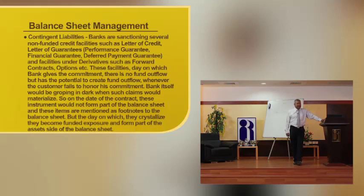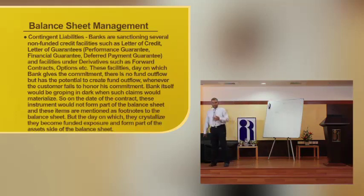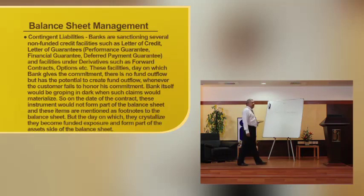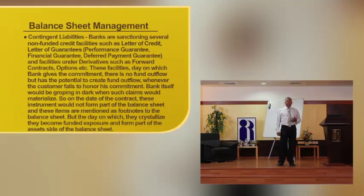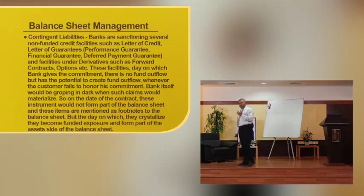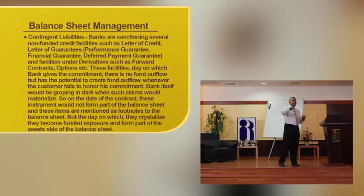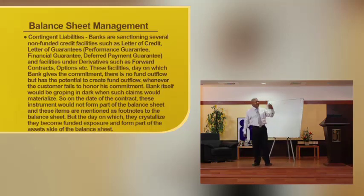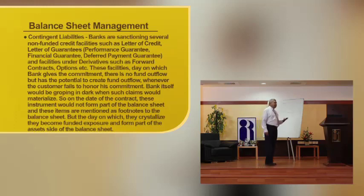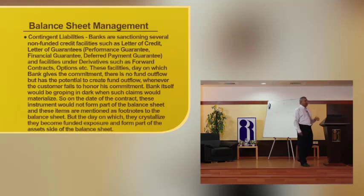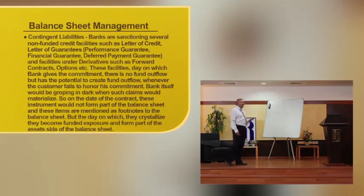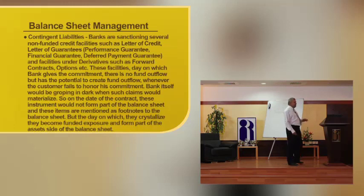The other class is called derivatives. By definition, derivatives are instruments which derive their value from an underlying exposure. Suppose an exporter has receivables in foreign currency. If the rupee is appreciating — say, today 1 dollar equals 61 rupees, and there is an apprehension that in the future the dollar may go to 50 rupees — it means if I convert the dollar today, I get 61 rupees, but by the second or third month I am going to get fewer rupees. This can be hedged by taking a forward contract with the bank. Derivatives can be forward contracts, interest rate swaps, forward rate agreements, or credit default swaps.